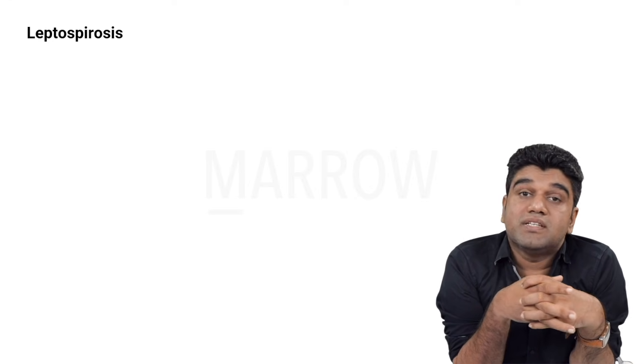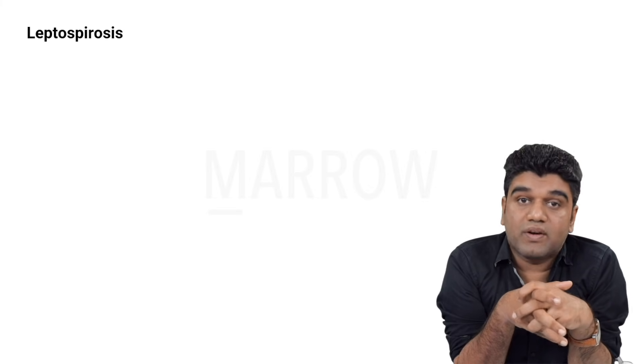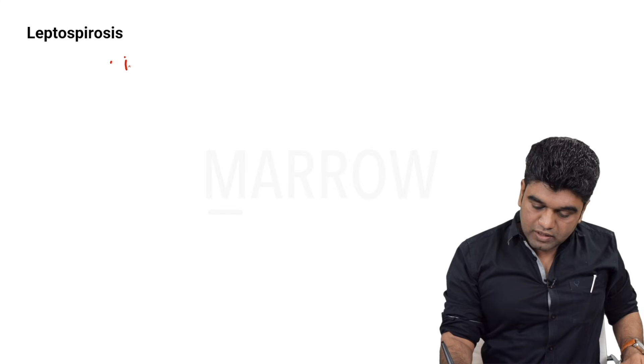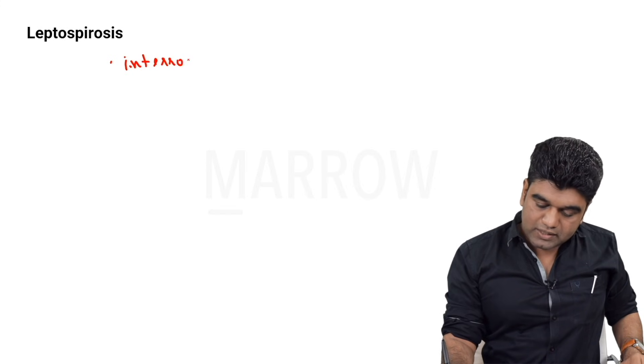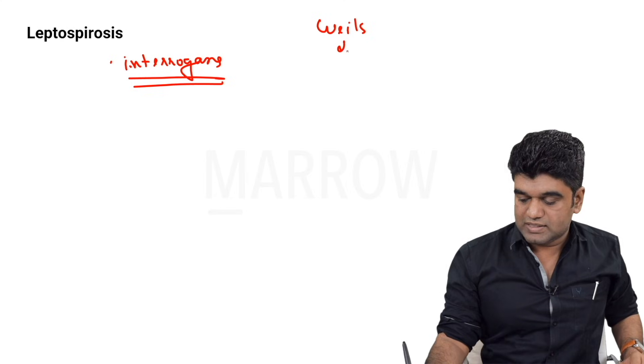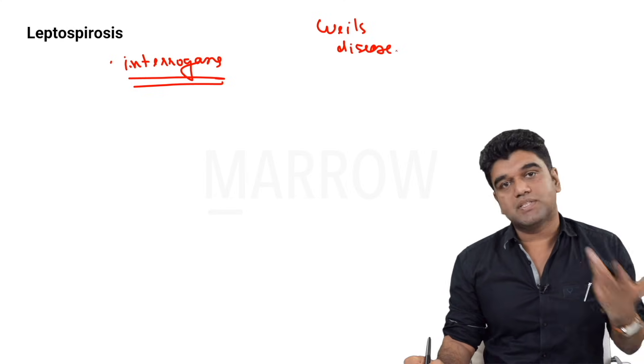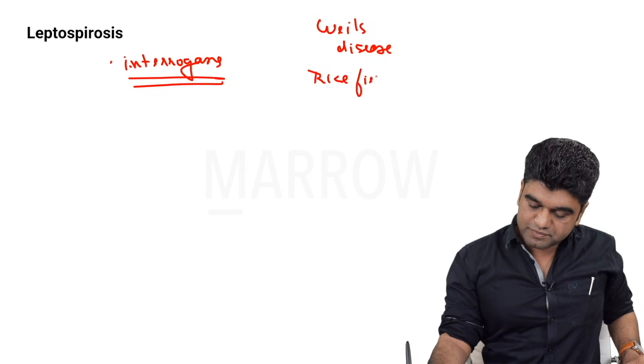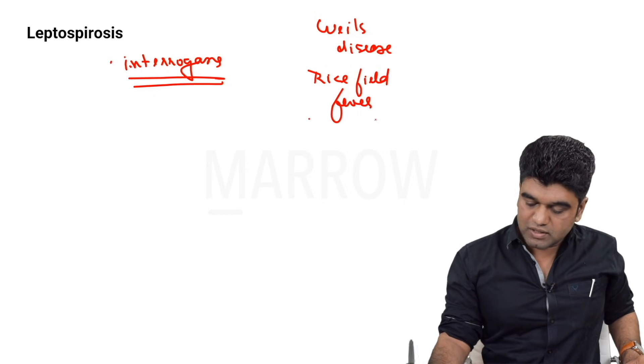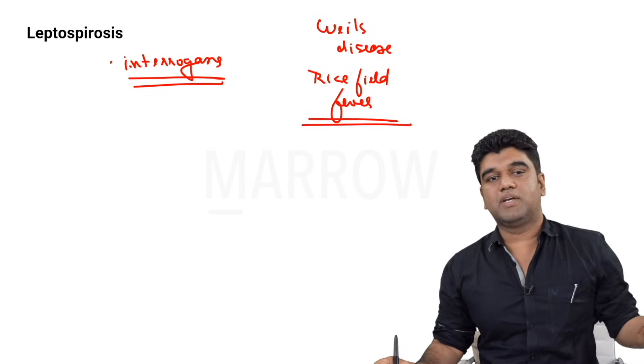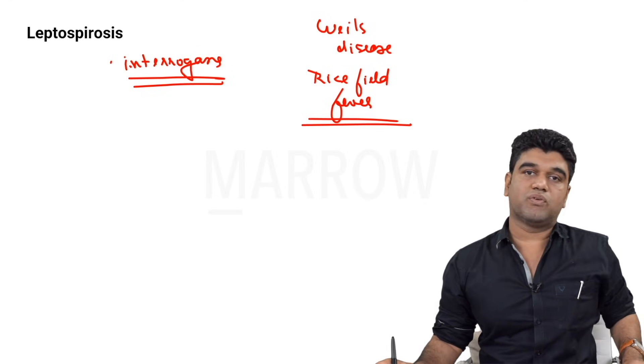The genus is Leptospira. The species we commonly see is interrogans. Leptospira interrogans is what we actually see. There are many other names - we call it Weil's disease. It's not just the hepatorenal component, the disease per se can be called Weil's. It's also called rice field fever, and Japanese call it nanukayami fever.